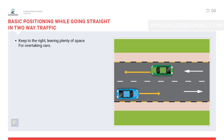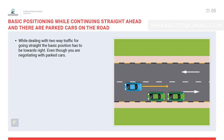Basic positioning while going straight in two-way traffic: the basic position of the vehicle should be towards the right. By keeping right, the driver provides sufficient gap for road users behind if they tend to overtake. Moreover, by keeping right, the driver will have sufficient distance from oncoming vehicles.